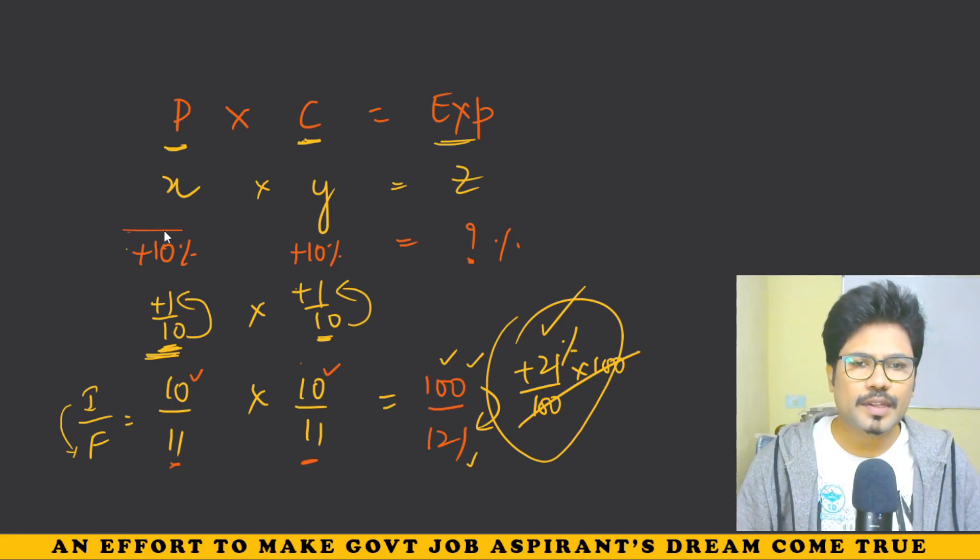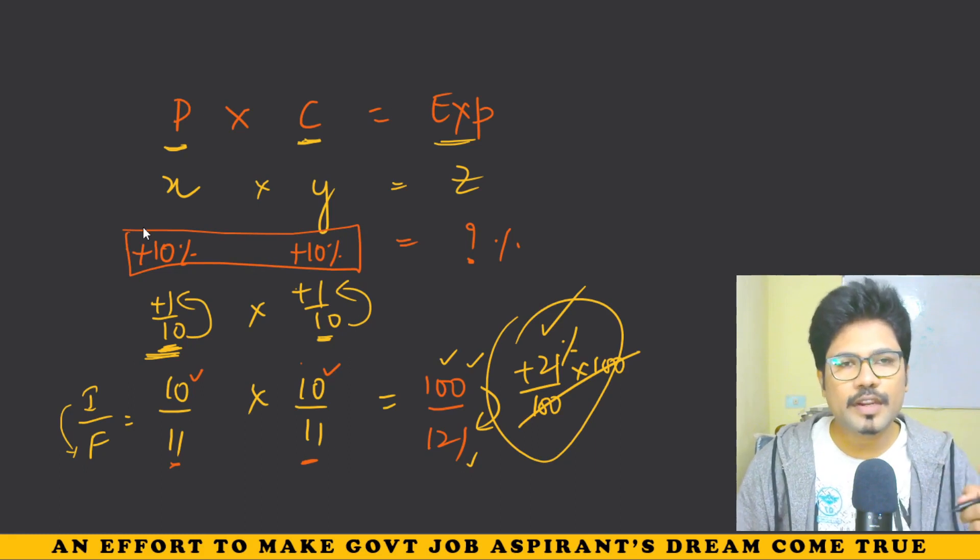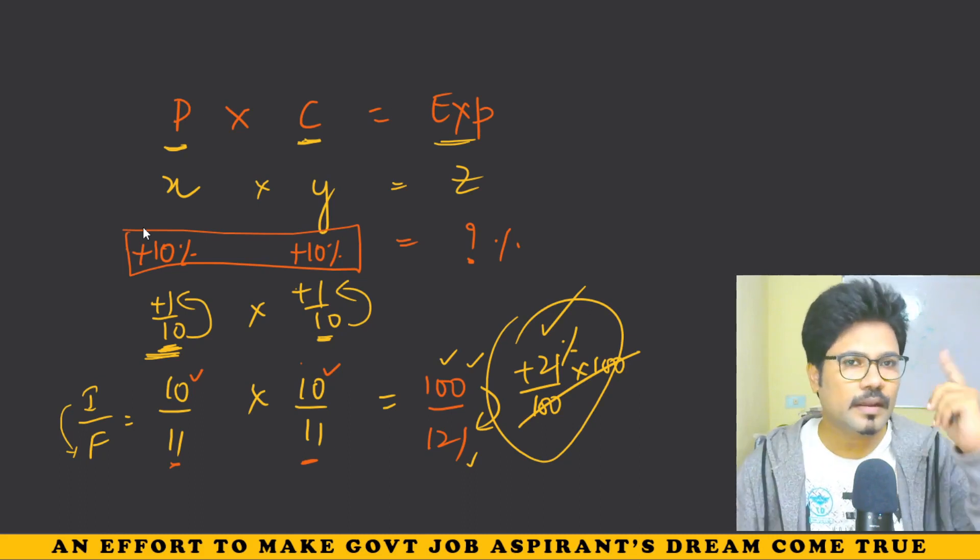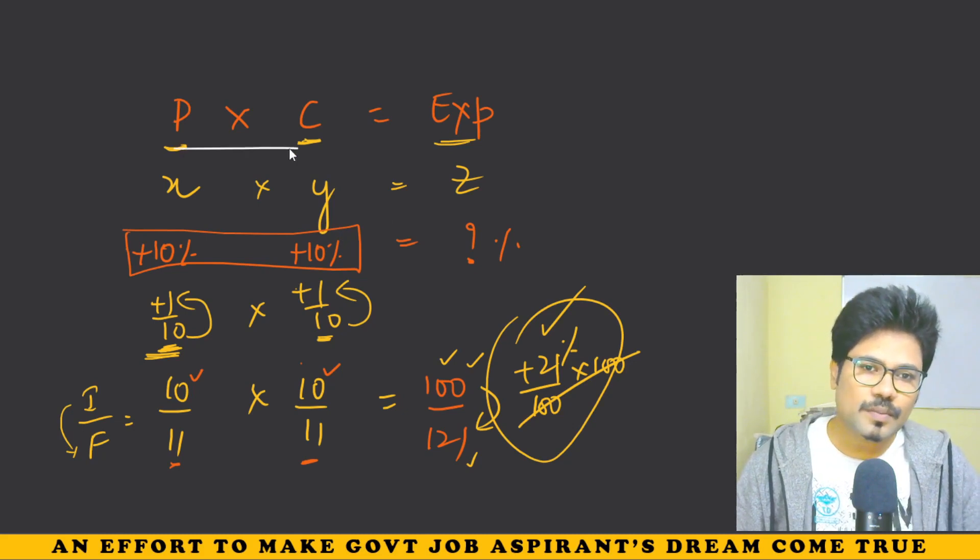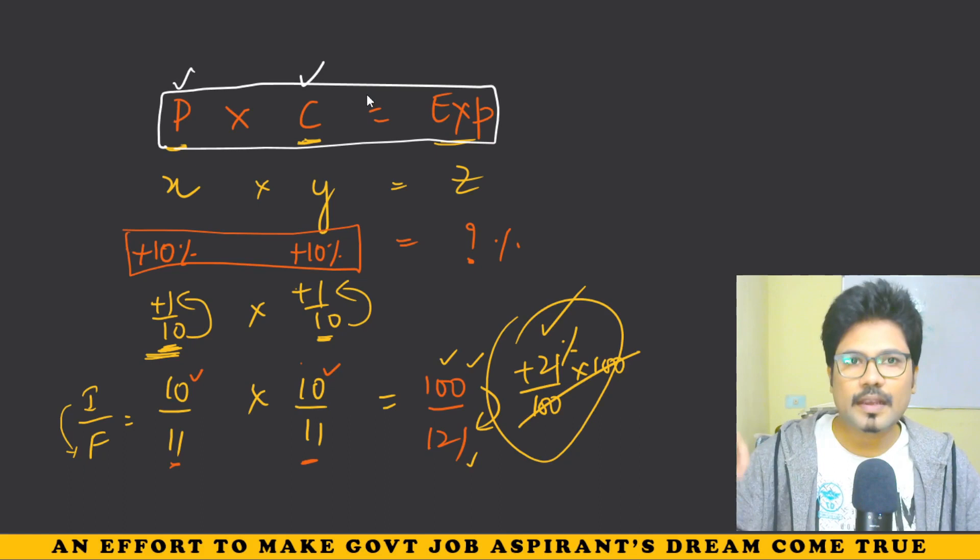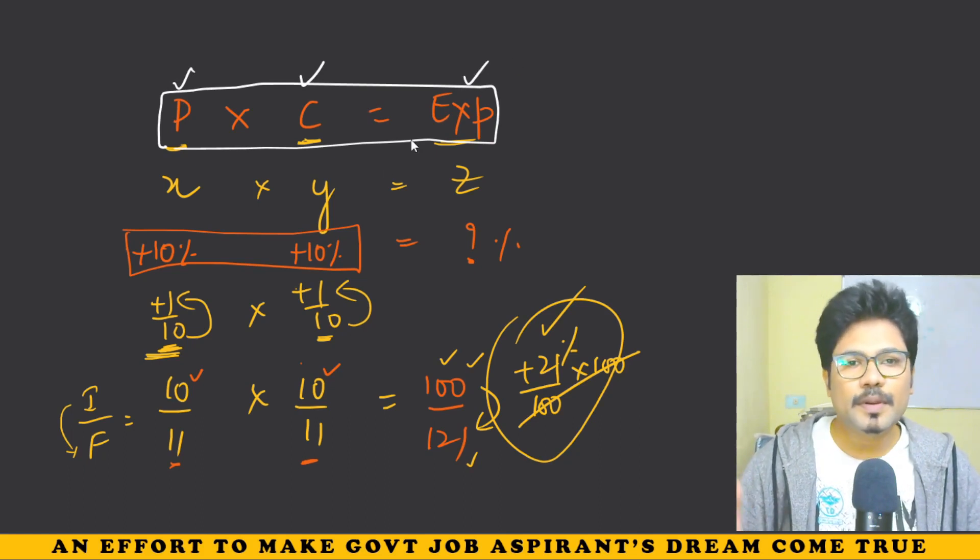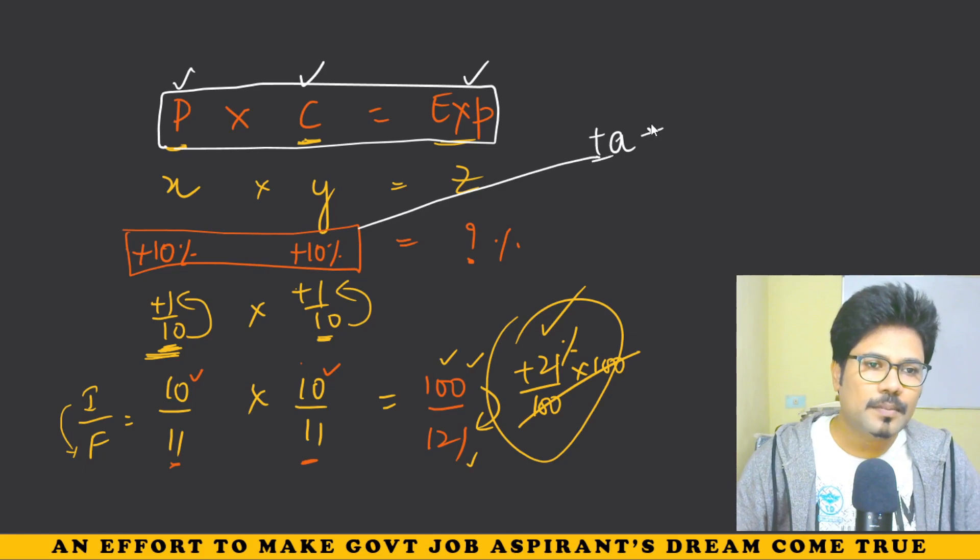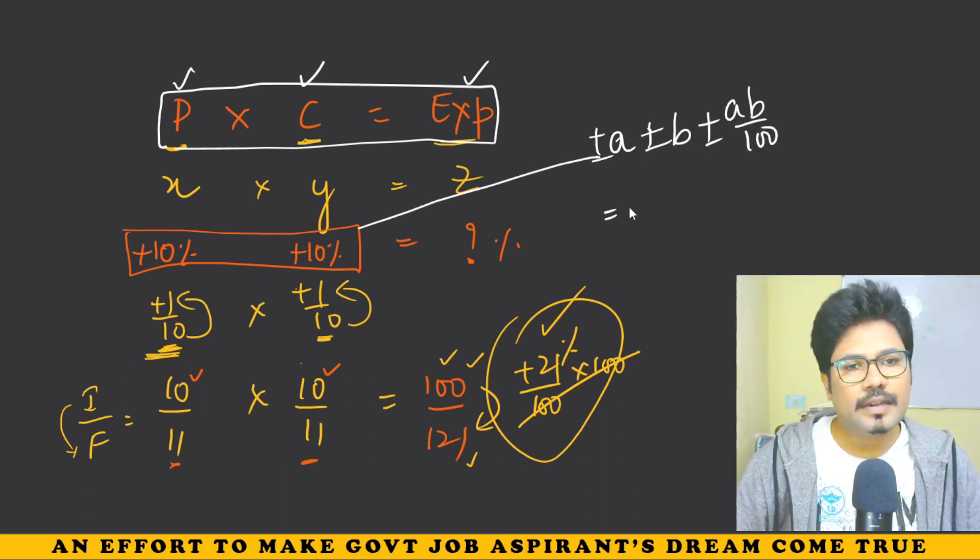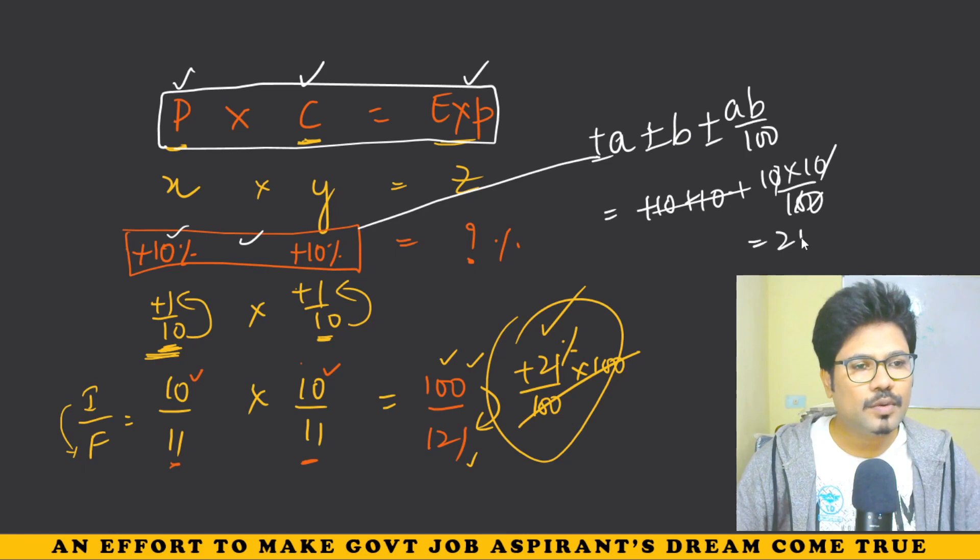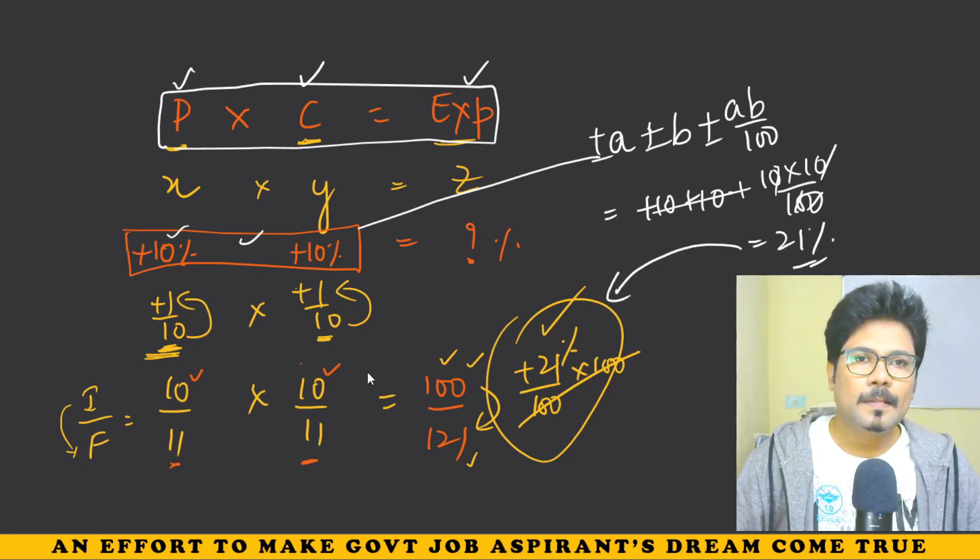It's not that knowing effective percentage will suffice, but the effective percentage formula is this. For P into C equals expenditure, when two percentages are multiplied, you use plus or minus a, plus or minus b, plus or minus ab by 100. Since both are increasing, it's plus 10, plus 10, plus 10 into 10 by 100. That equals 20 plus 1, which is 21 percent.